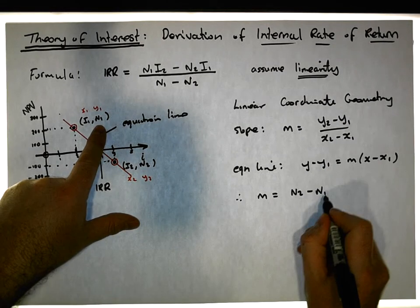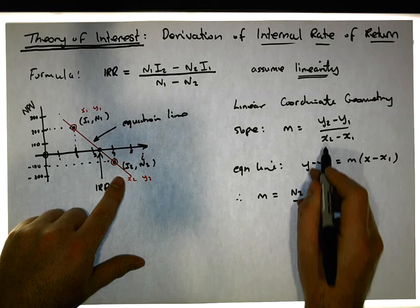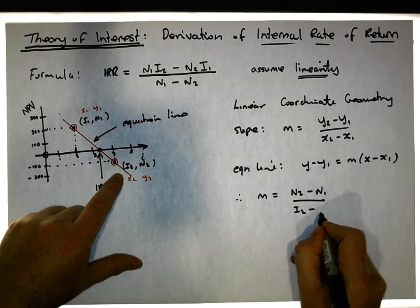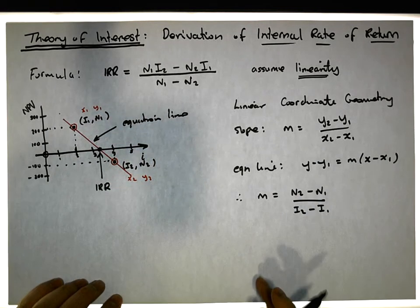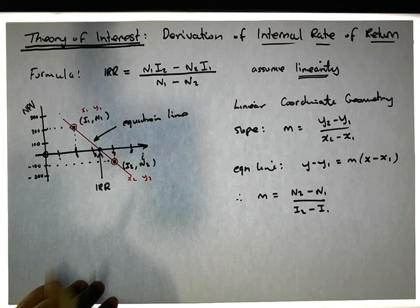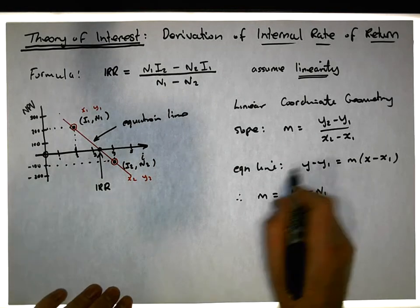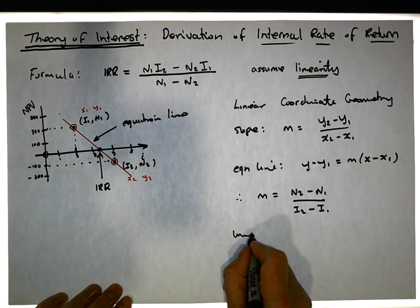We now have, therefore, our slope is equal to y2 which is n2 minus y1 which is n1, all over x2 which is i2 minus i1. That's the slope of the relationship between two net present value calculations at two different interest rates.